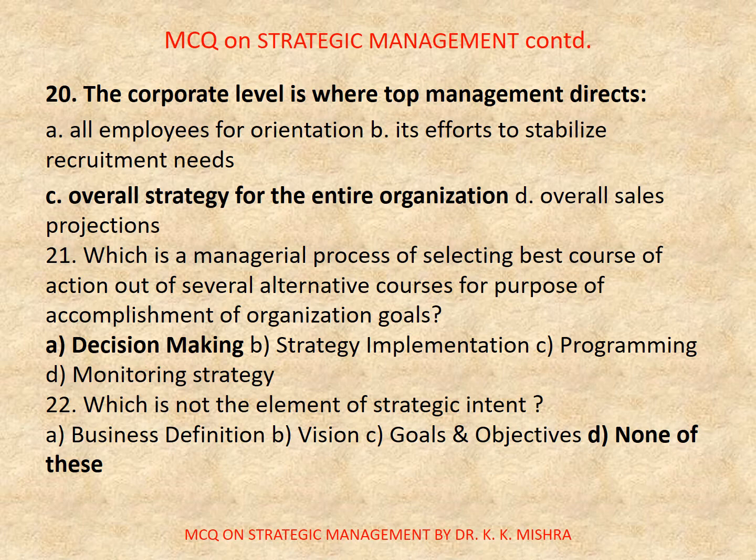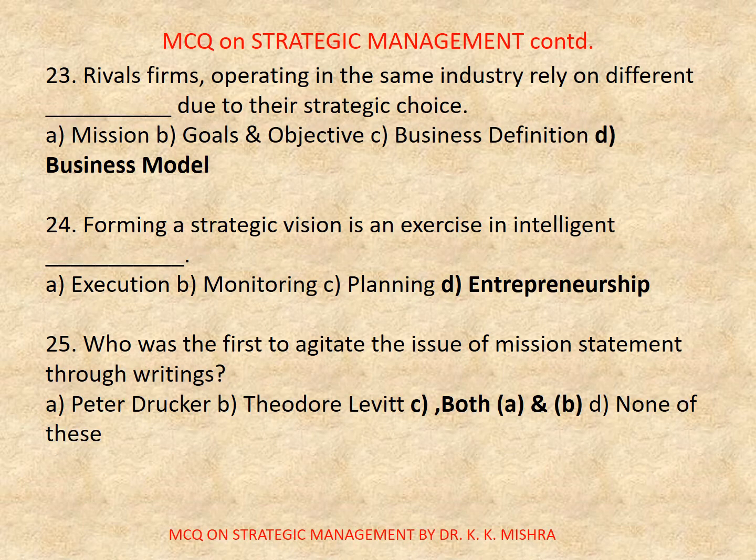Question number 21. Which is a managerial process of selecting the best course of action out of several alternative courses for the purpose of accomplishment of organizational goals? A. Decision making, B. Strategy implementation, C. Programming, D. Monitoring strategy. Correct option is A. Decision making. Question number 22. Which is not an element of a strategic intent? A. Business definition, B. Vision, C. Goals and objectives, D. None of these. Correct option is D. None of these.